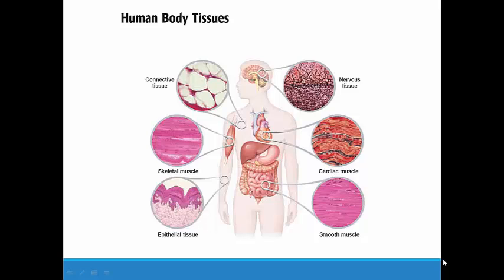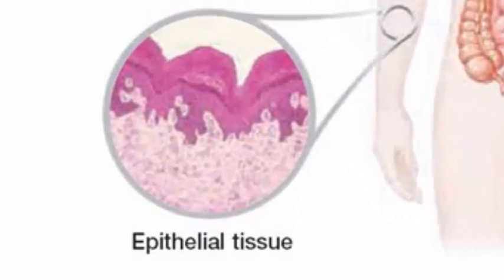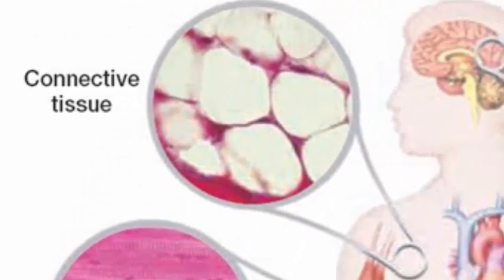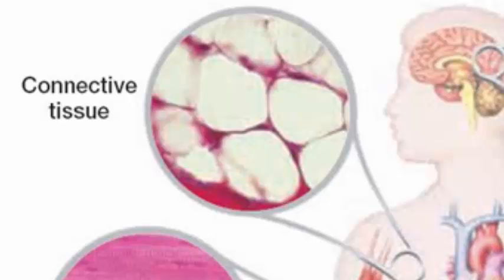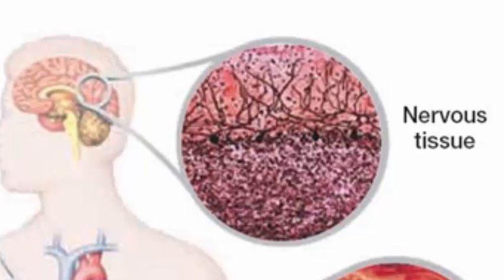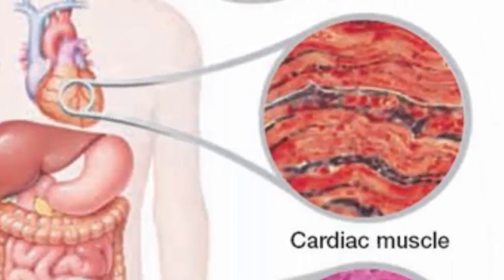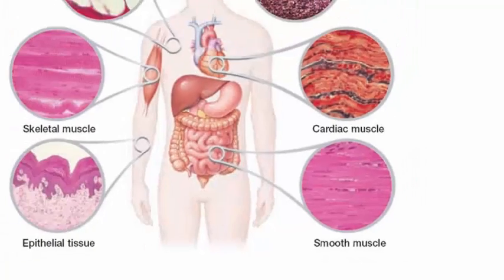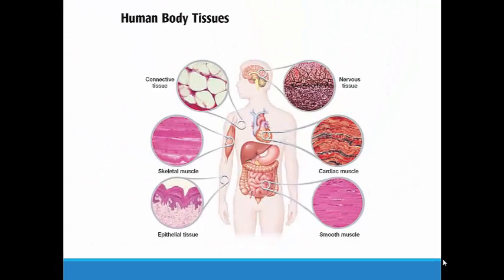Just to give you an idea of where you would find some of these tissues, you can take a look at this diagram. One type of epithelial tissue is our skin. Skeletal muscle is found in our biceps. We have connective tissue running throughout our body — these cells actually look a lot like fat cells. Our brain is made up of nervous tissue. We also have two other types of muscle tissue: cardiac muscle is a special muscle tissue found in our heart, and smooth muscle, which we don't have control over, is found throughout our digestive tract, including our intestines.